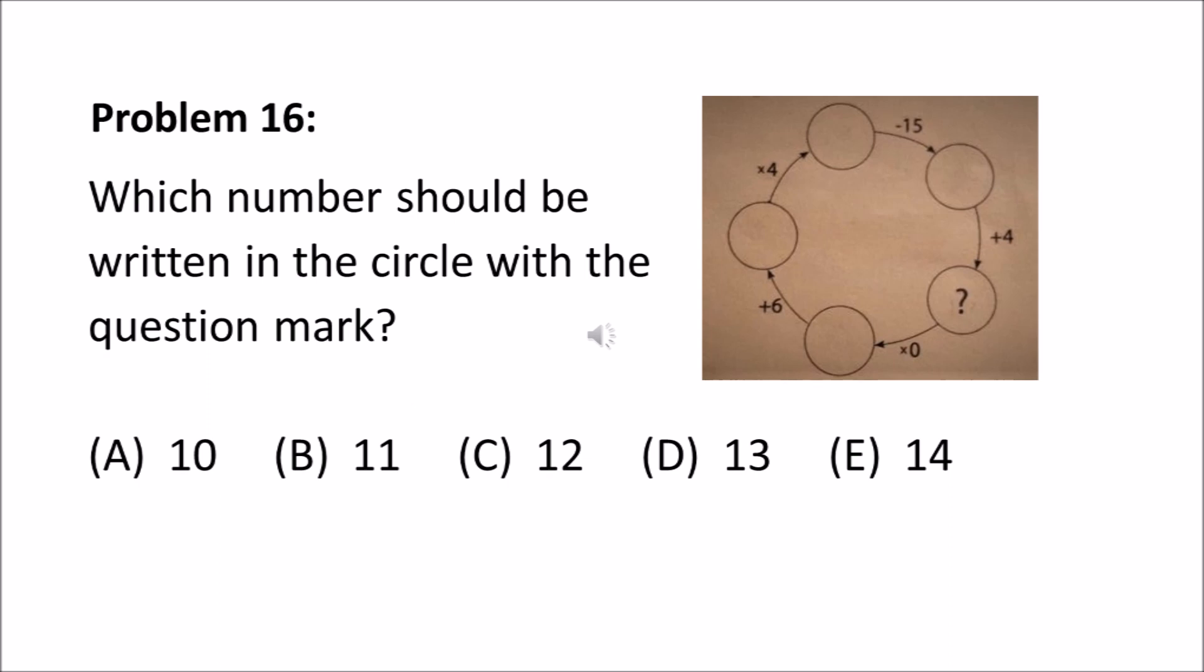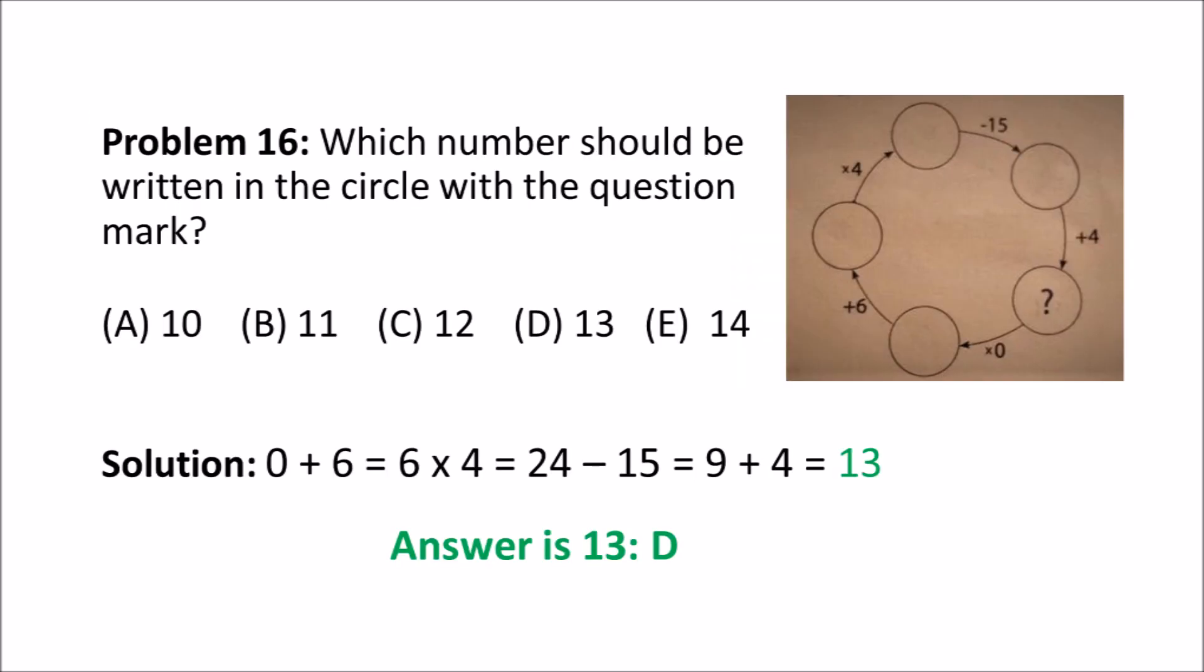To answer this question, you start with the circle at the bottom, and next to it it says 0. So 0 plus 6, which is to the left, is 6. 6 times 4, which is right above that, is 24. And you go over to the next circle and it says minus 15. 24 minus 15 is 9, and then plus 4, 9 plus 4 equals 13. So the answer is 13, D.